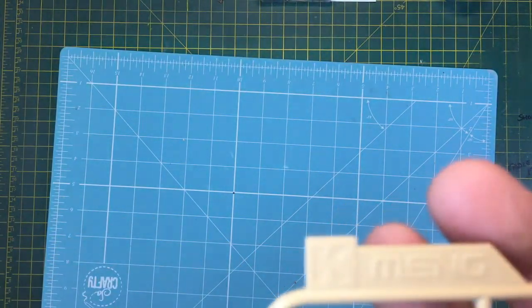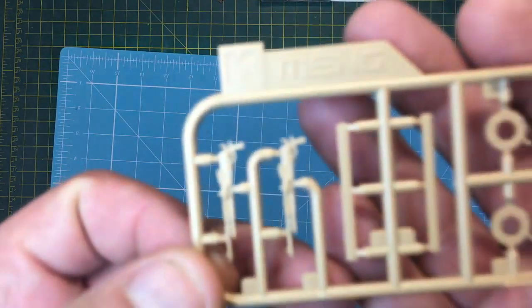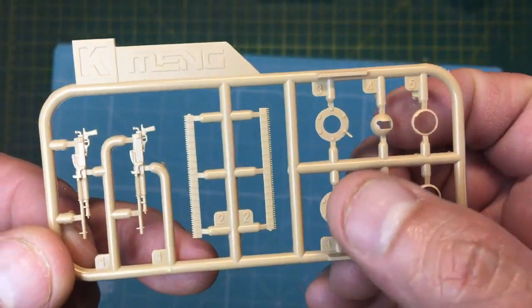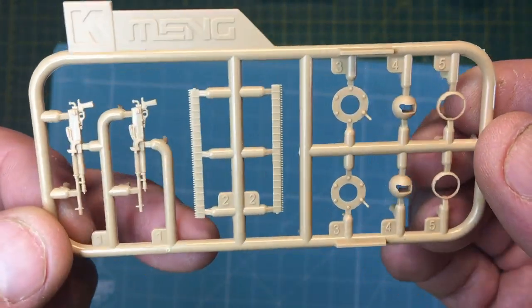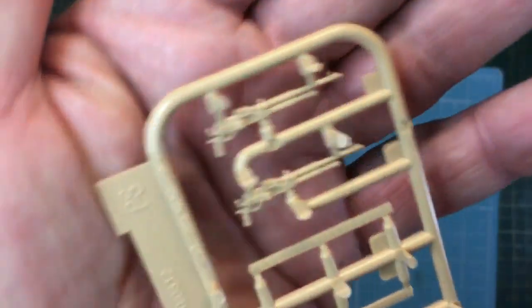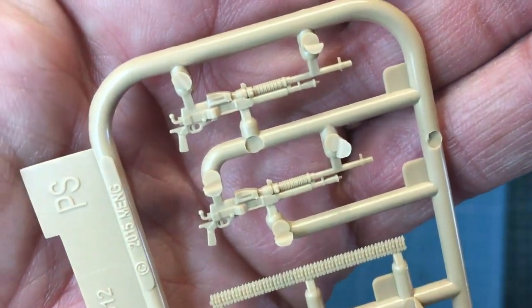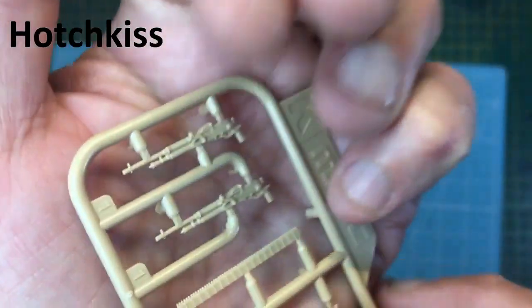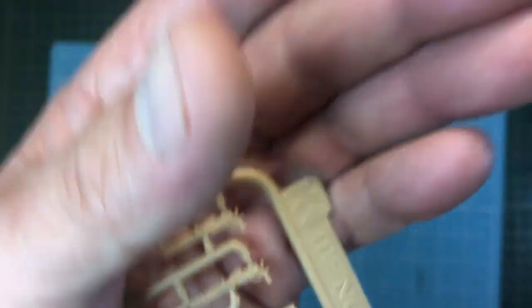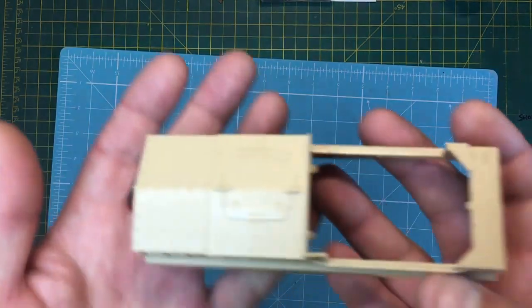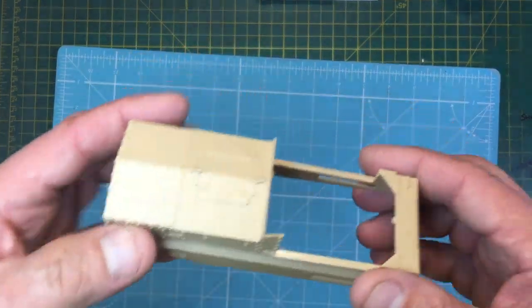We've got two identical sprues again for the guns. These are obviously the ammo belts, and then the gun mountings here. Again, all very similar to the Mark IV. The machine gun detail, that's very nice. Not sure what they are - I guess they're Lewis guns, are they? Yeah, they're quite nice. Again, I don't know about accuracy, I don't know the subject that well.